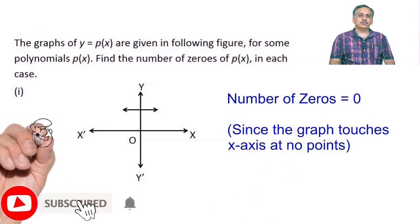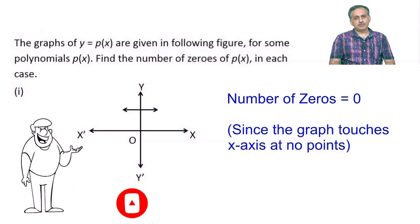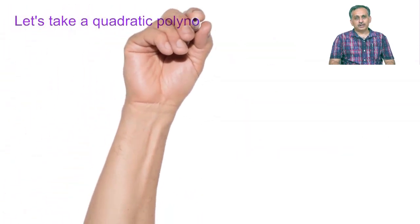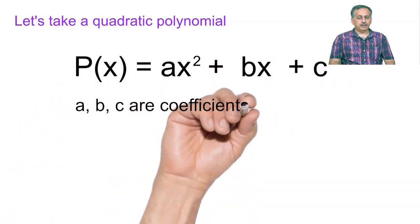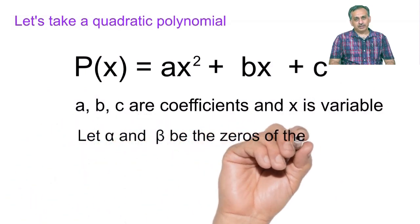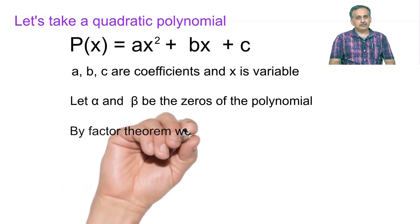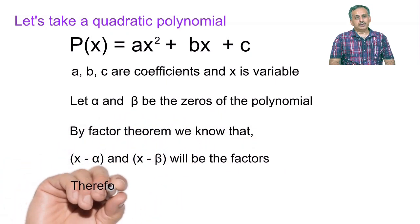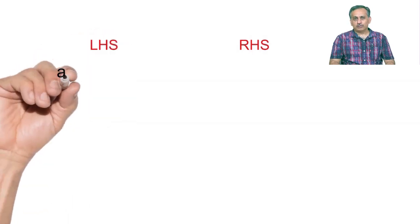Now we will also learn about the relationship between the zeros and coefficients of a polynomial. For that, let our quadratic polynomial be ax square plus bx plus c. Here a, b, c are called the coefficients of the polynomial and x is called the variable. Now let alpha and beta be the zeros of this polynomial. Then by the factor theorem, x minus alpha and x minus beta will be factors of the polynomial, and their product will also be a factor of the polynomial.